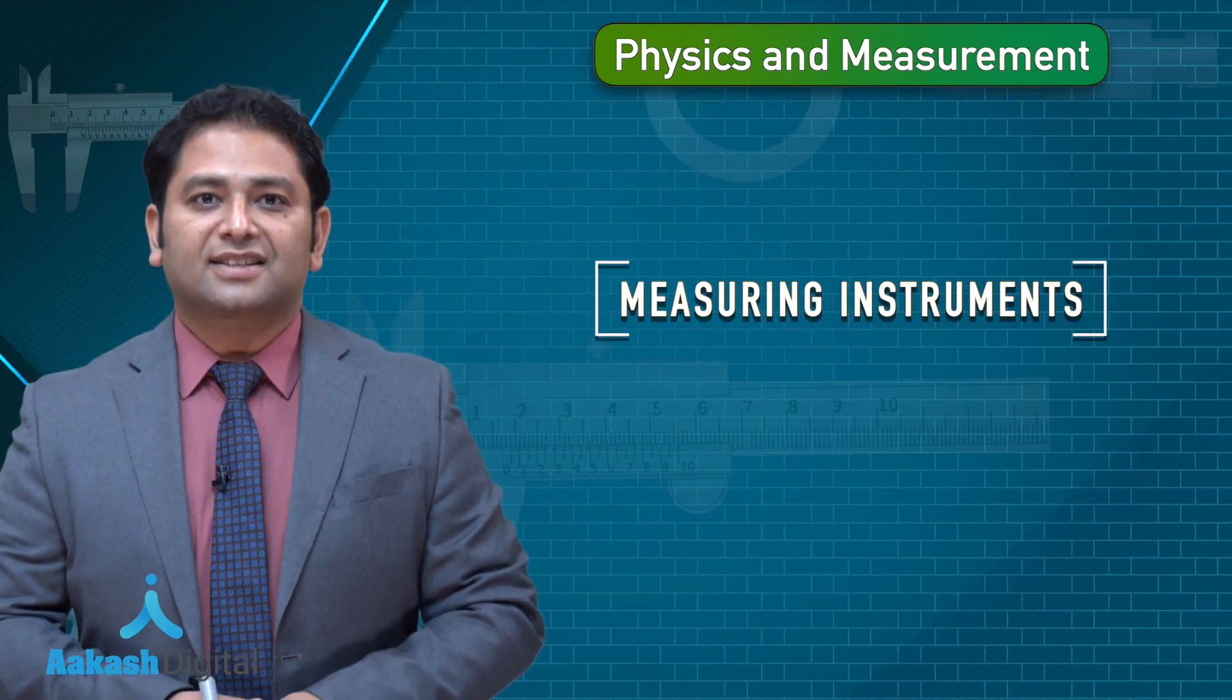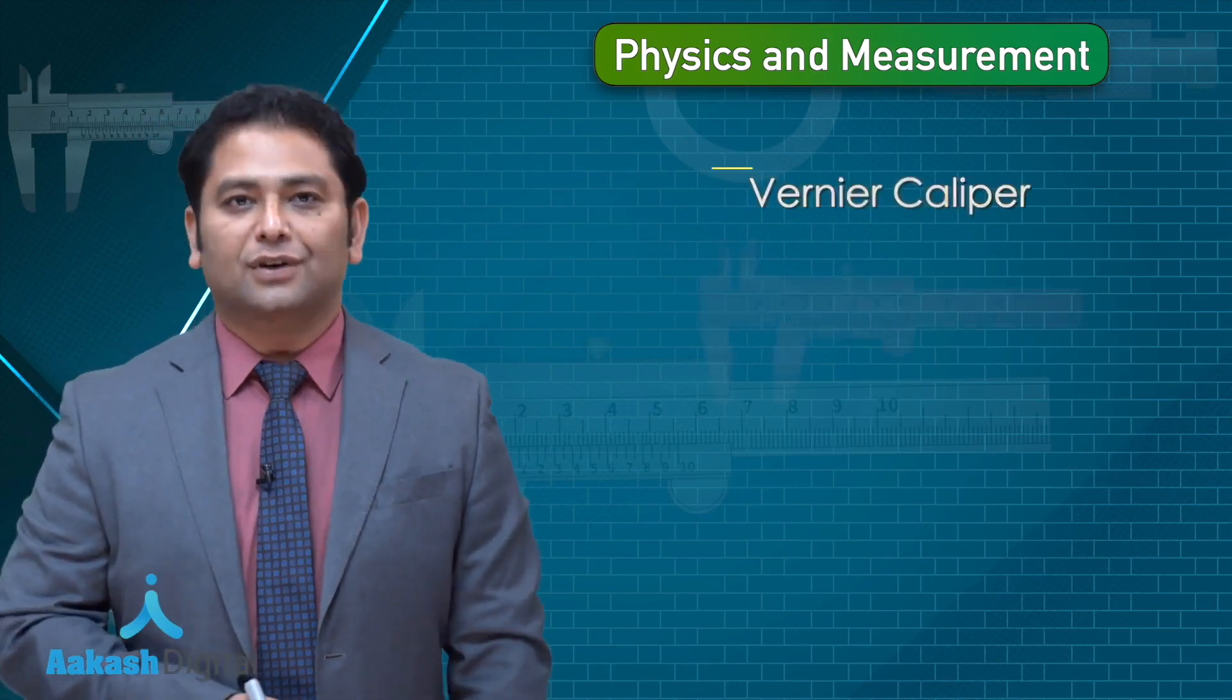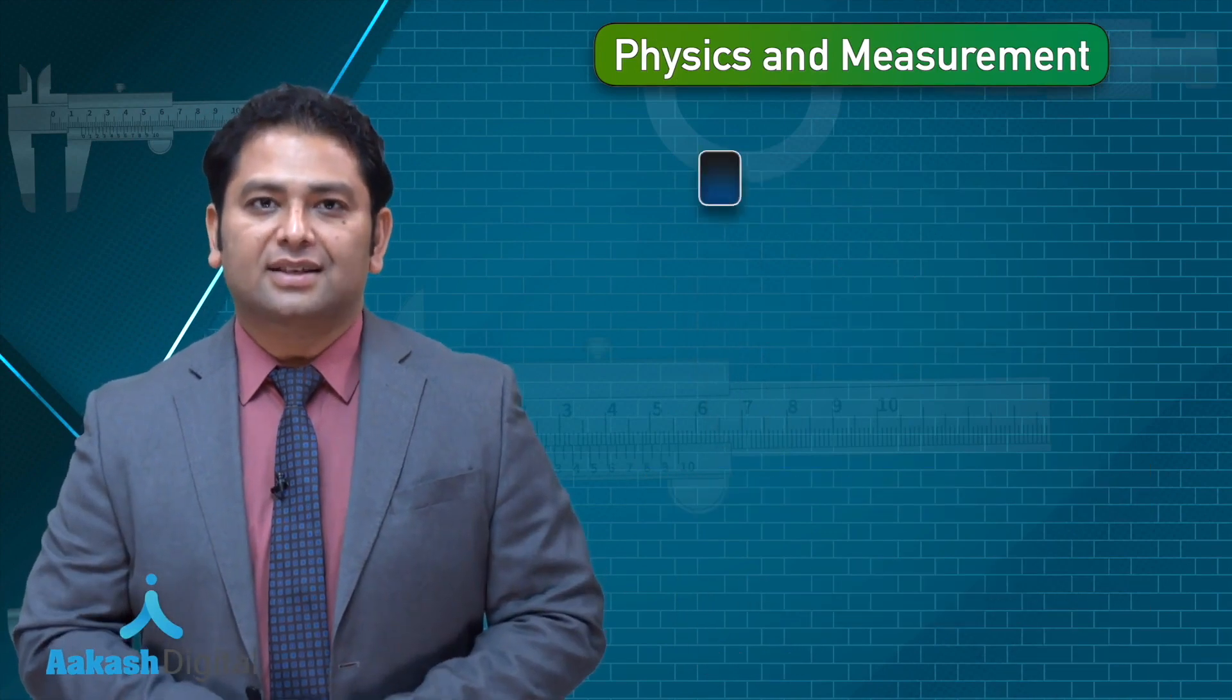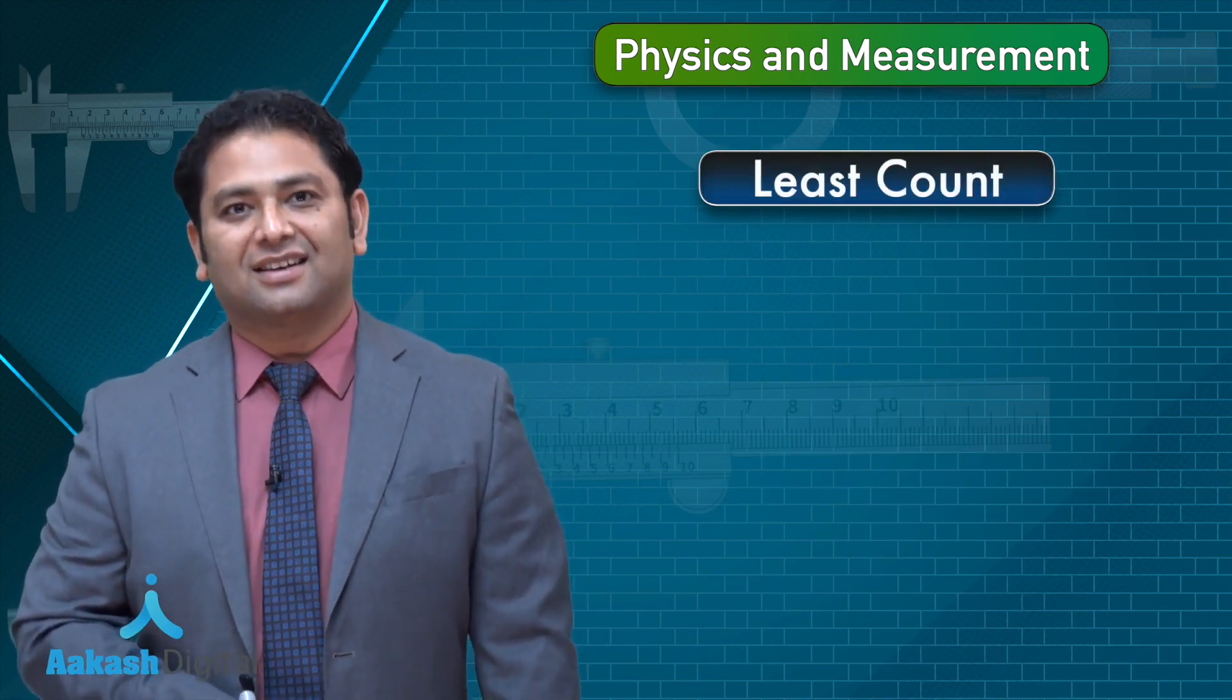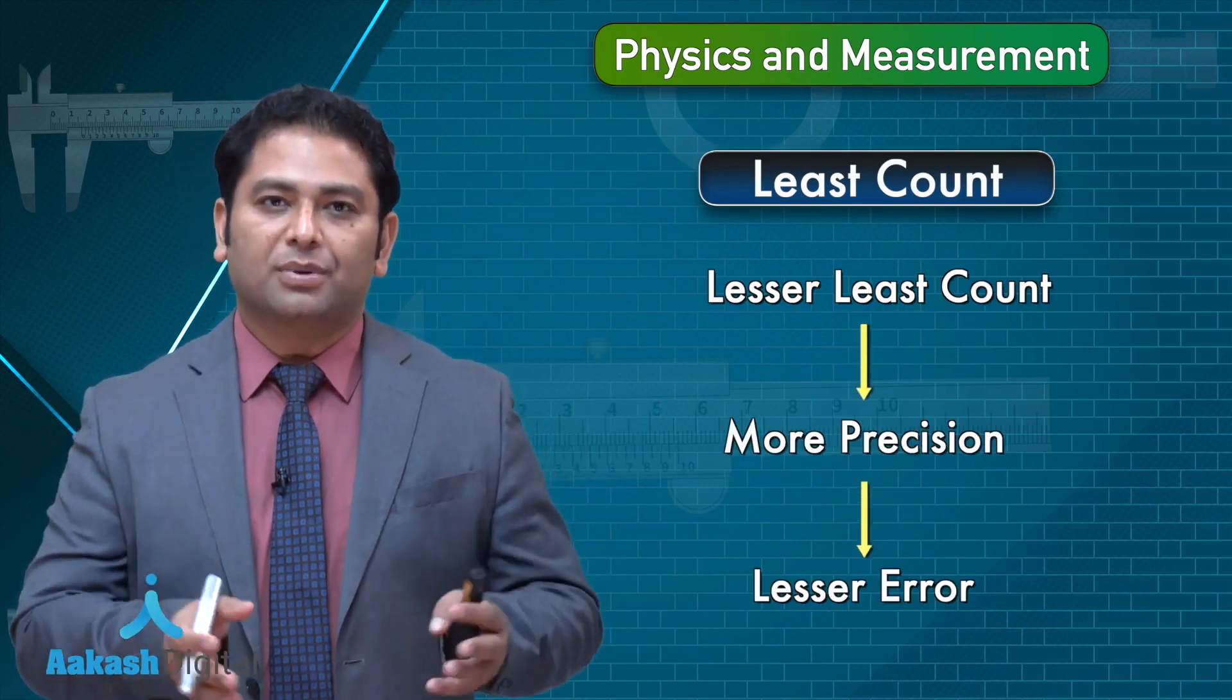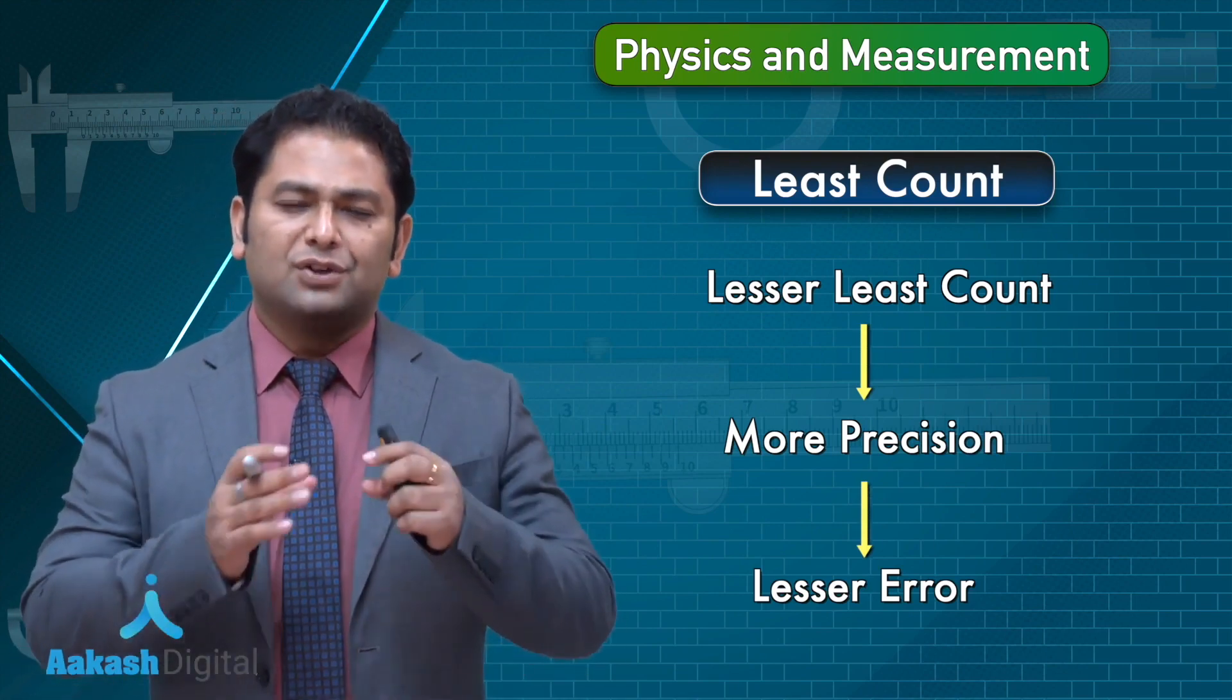This is a special discussion dedicated to measuring instruments, the Vernier caliper and micrometer screw gauge. For any measuring device, least count is a parameter which matters the most. Lesser is the value of least count, more would be the precision and less would be the error involved.